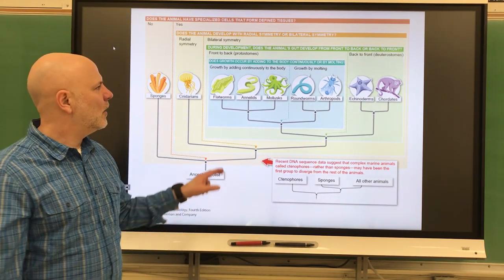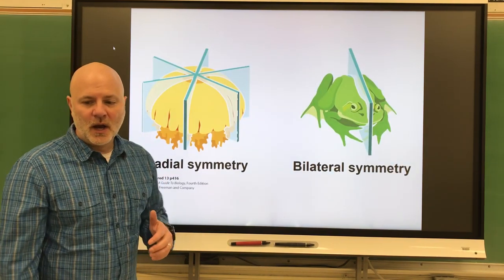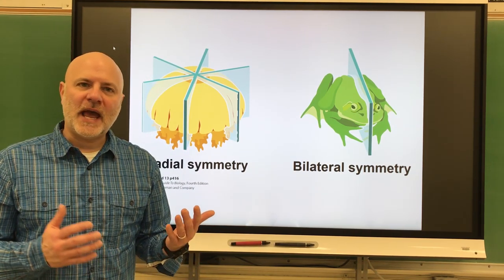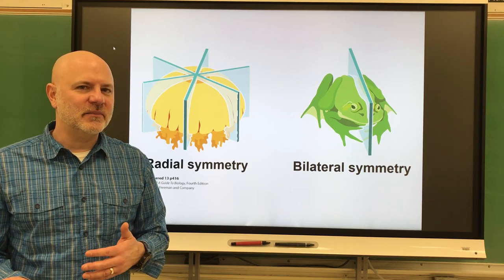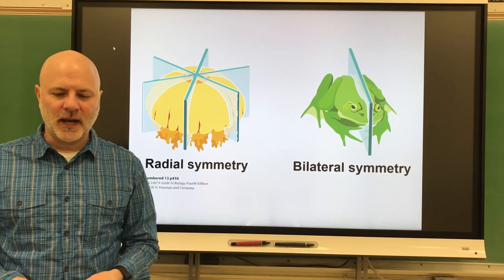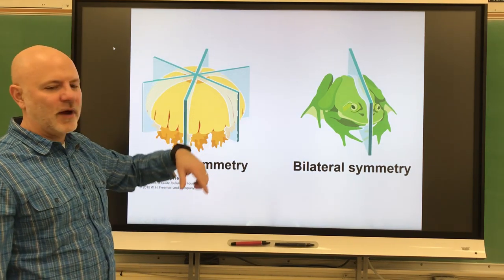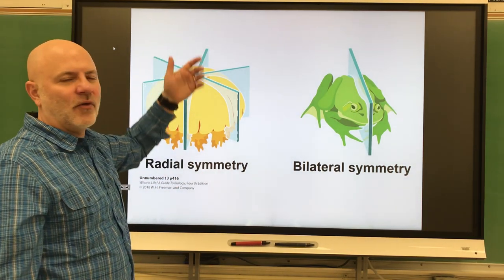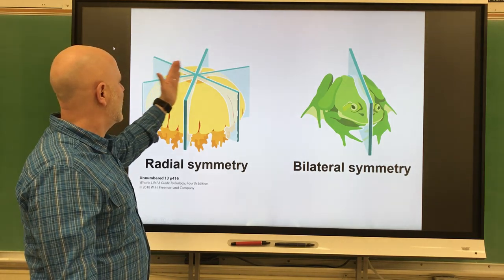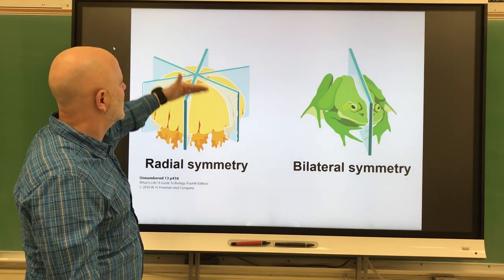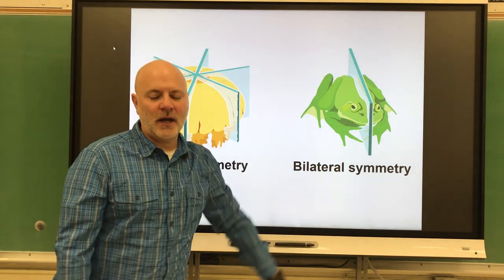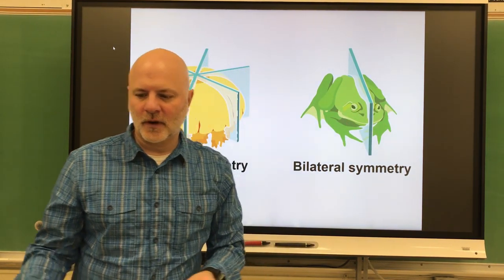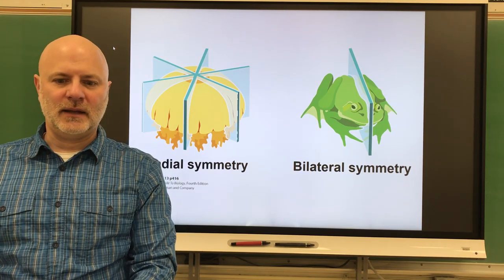Next is symmetry type. One symmetry type is being asymmetrical, meaning you have no body symmetry — and the only animals that are asymmetrical are sponges. Next is radial symmetry, where your body plan is kind of like a pie, so you can divide the body plane in several ways and each side is similar to the others. Or you can be bilaterally symmetrical — an organism that has a left side and a right side, like the frog. We are bilaterally symmetrical.